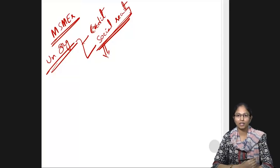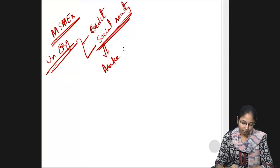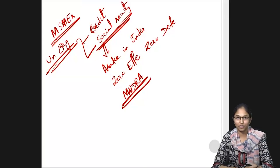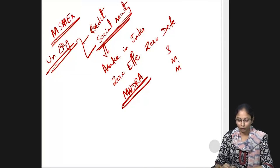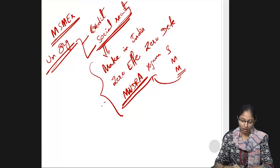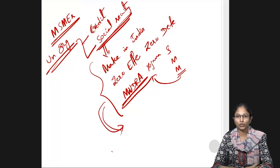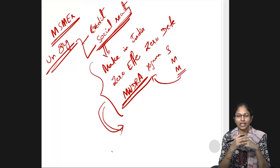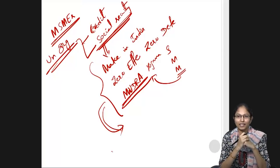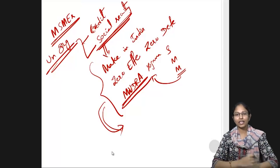Government initiatives include Make in India, the Zero Effect Zero Defect scheme, and Mudra Yojana — launched to provide affordable credit for the micro units within the MSME sector. Because of all these things, the MSME sector is envisaged to grow and contribute more to the Indian economy. For mains, the framework is: MSMEs' contribution, problems, and solutions. For prelims, remember 40% export potential and 49% employment generation potential of MSMEs.